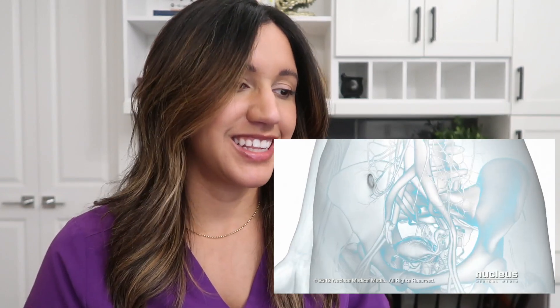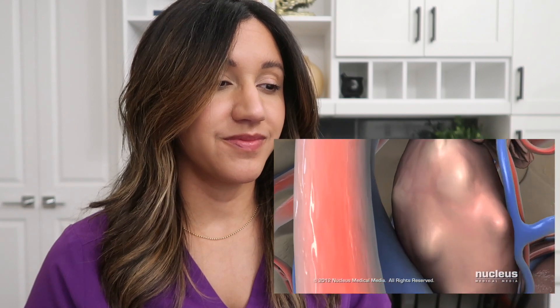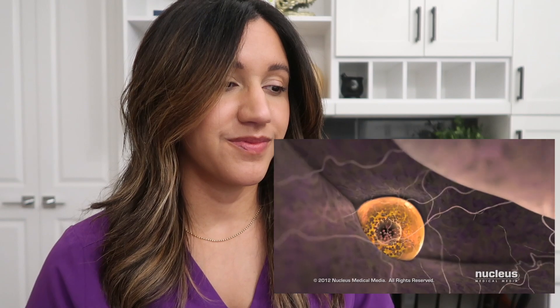Ovulation is a part of the menstrual cycle when the ovary releases a ripe egg or ovum. Inside the ovary are hundreds of thousands of follicles. Each follicle is a hollow ball of cells with an immature egg in the center.